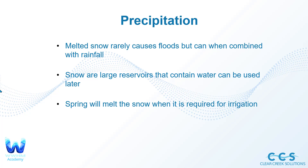Snow and ice are large reservoirs that contain water that can be used later. When it snows on a mountain or high elevation area and stays in frozen form, that water can be saved for later in the spring or summer when it finally melts, providing a freshwater source for the local community. Spring melt can also supply water needed for irrigation of certain farm practices.